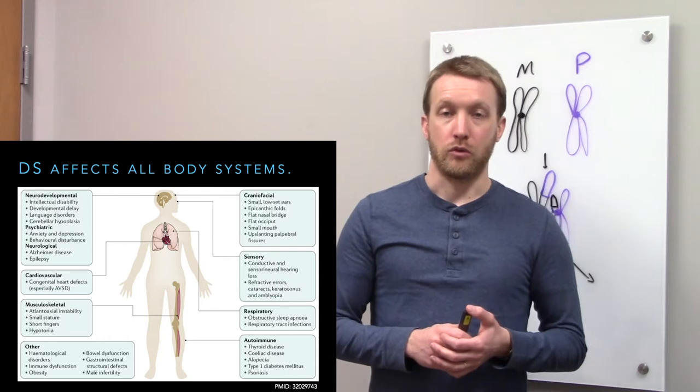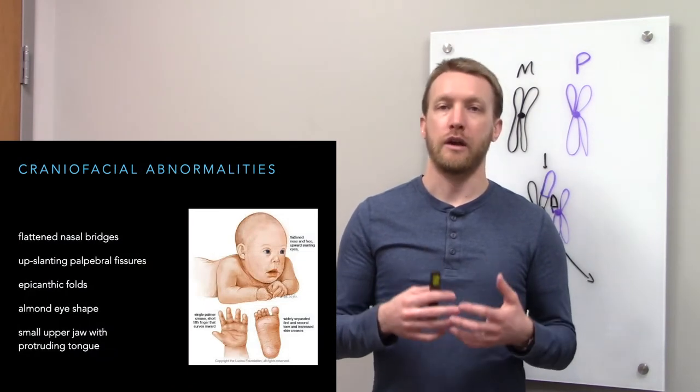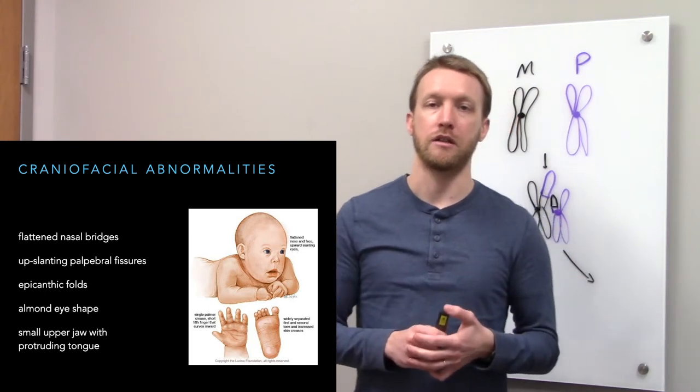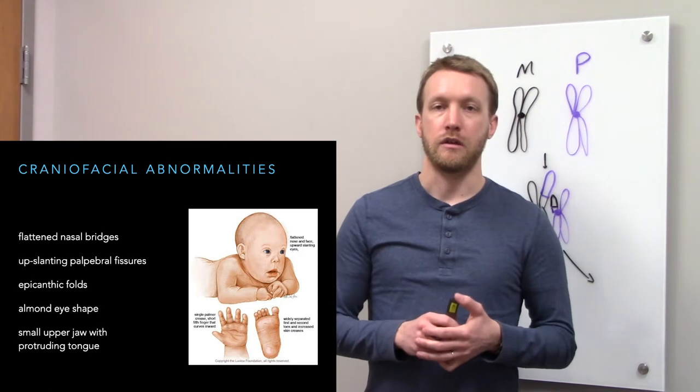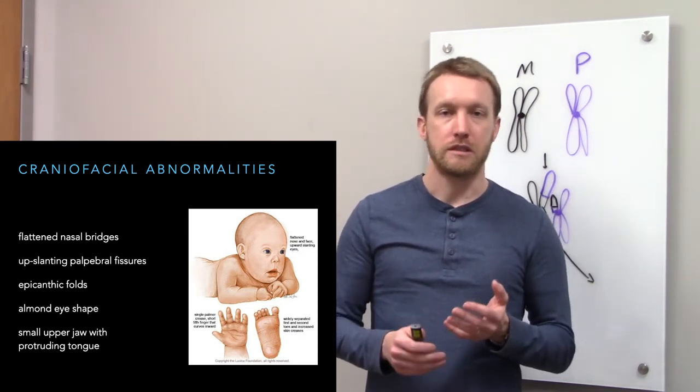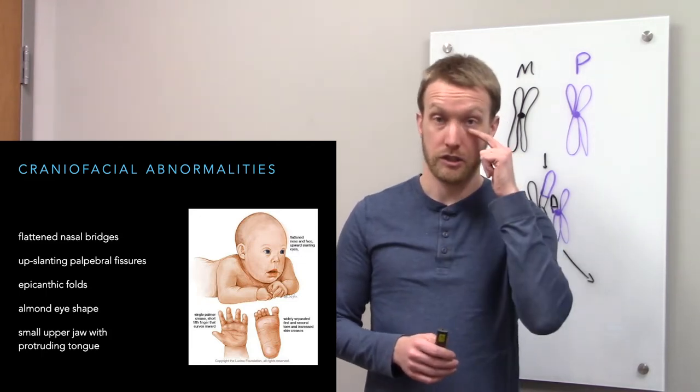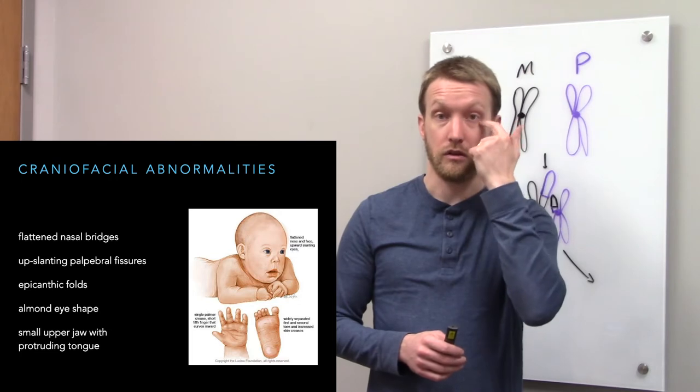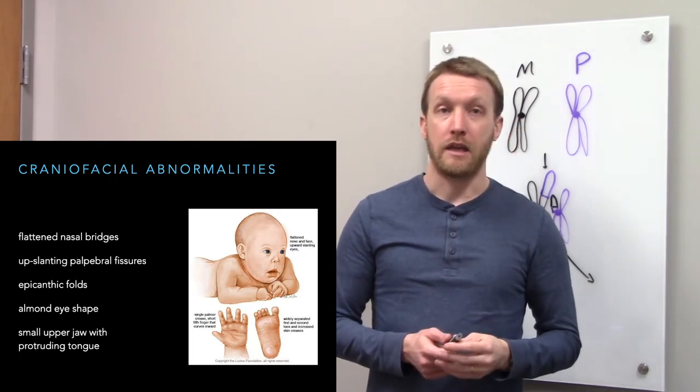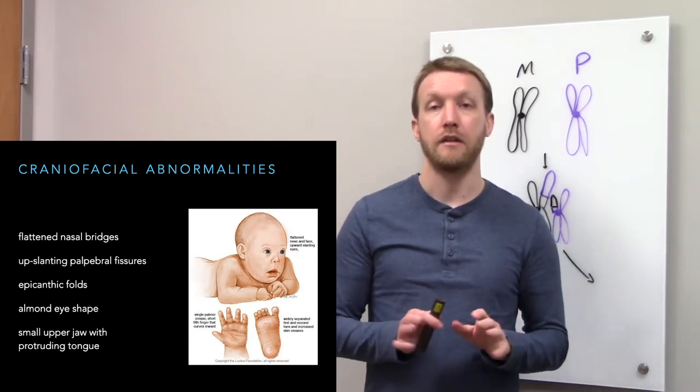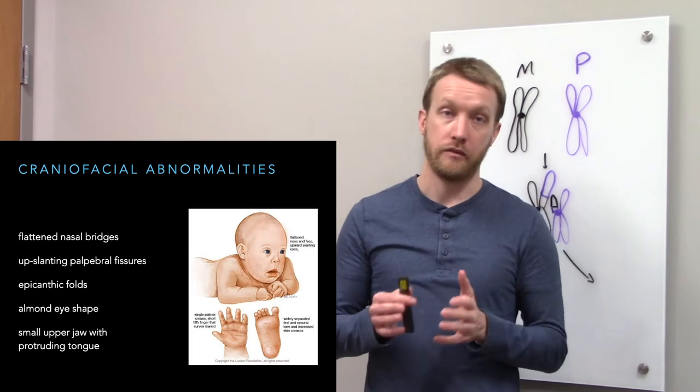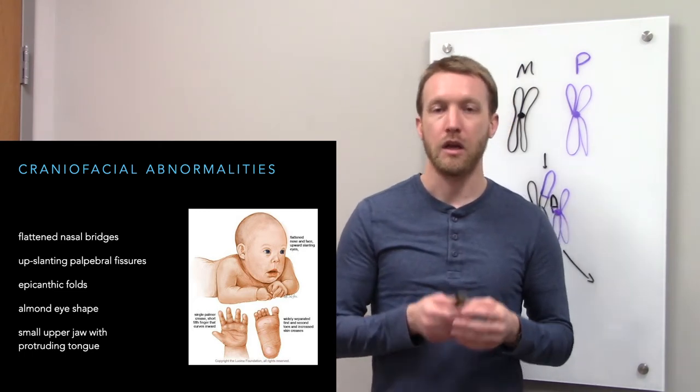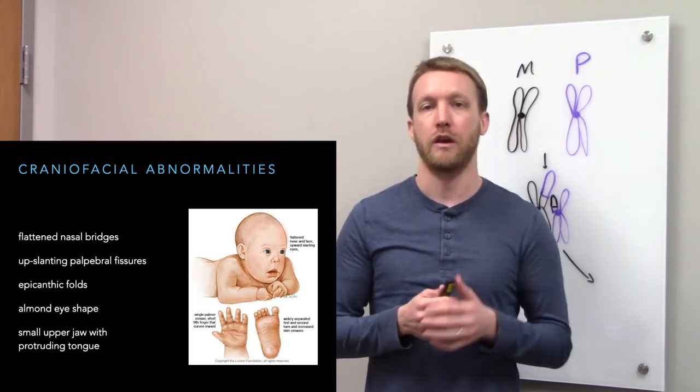Down syndrome is going to cause stereotypical craniofacial abnormalities. Some of these we can pick up through ultrasound. The typical features would be the flattened nasal bridge, a change in eye shape where there's an up slanting of the palpebral fissure, creating kind of an almond shaped eye. The presence of epicanthic folds is another trait of Down syndrome. Some ethnic groups have epicanthic folds such as East Asians, but white folks typically don't, though these are more common in people with Down syndrome.